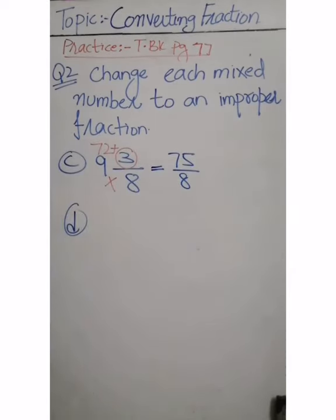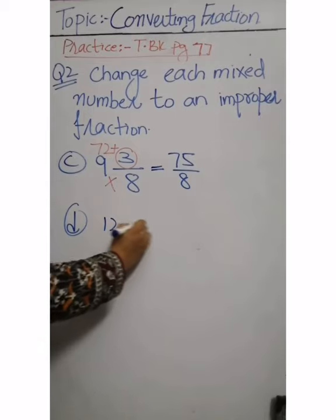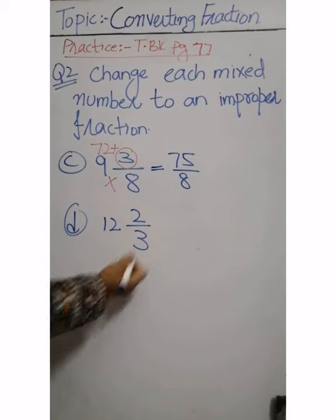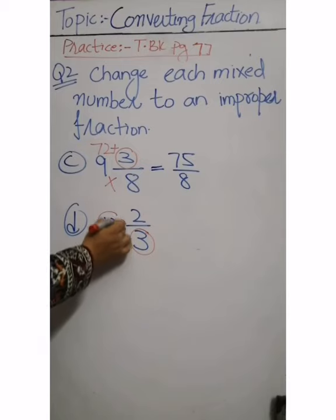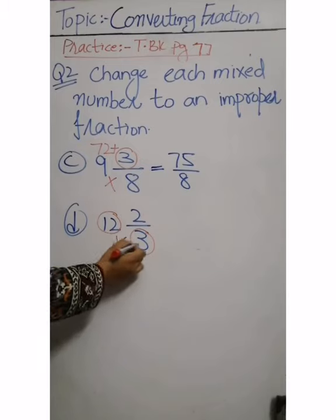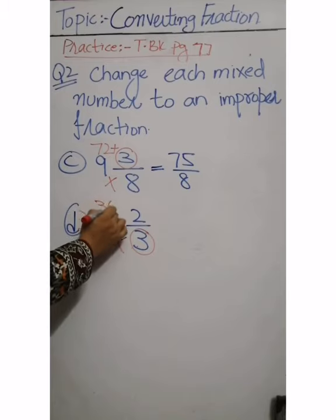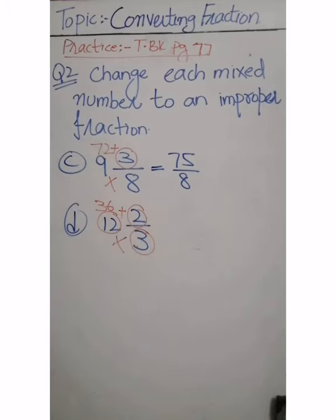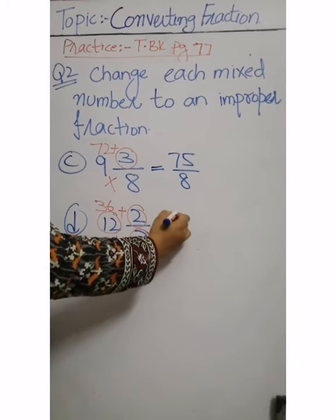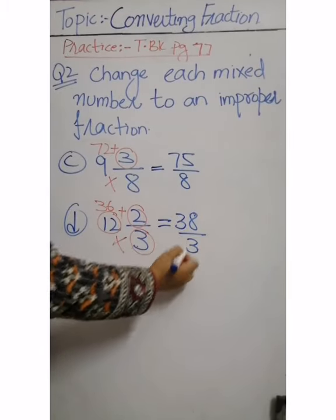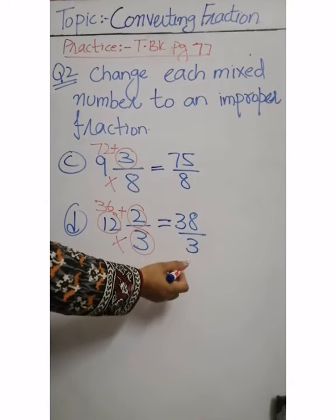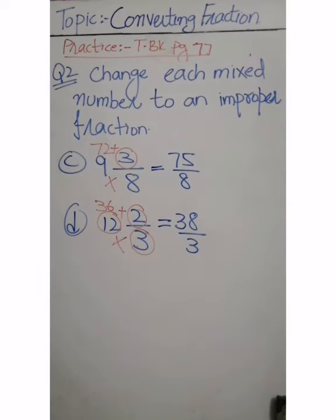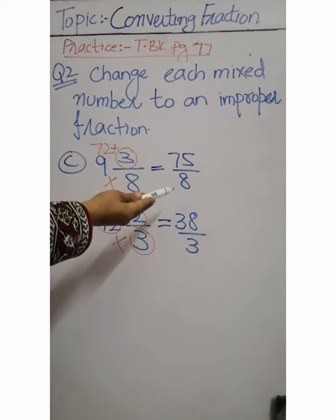Part d: 12 whole 2 by 3. First, multiply the denominator by the whole number: 3 times 12 gives 36. Now add the numerator: 36 plus 2 gives 38. So 38 by 3 is an improper fraction. I hope you all understand how to convert a mixed number to an improper fraction. Thank you.